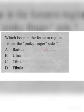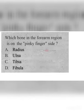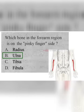Which bone in the forearm region is on the pinky side? A. Radius, B. Ulna, C. Tibia, D. Fibula. The correct answer is B. Ulna. In the forearm region, the ulna bone is on the pinky finger side.